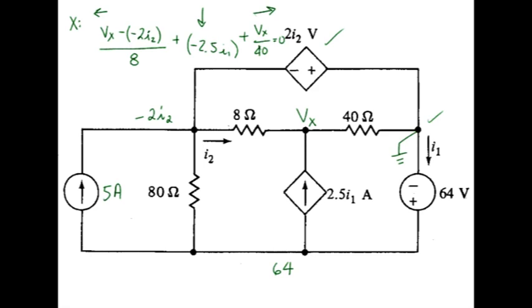Now the other thing we need to do is write down the following. So the next step, we need to write the dependent source control parameters in terms of the assigned voltages.